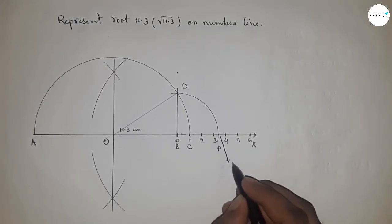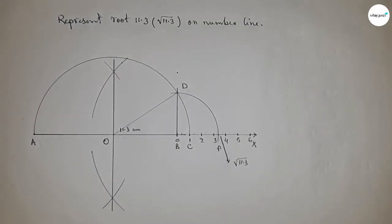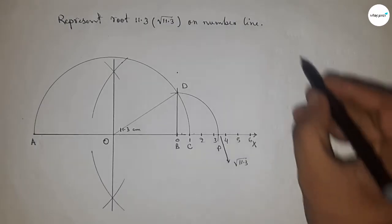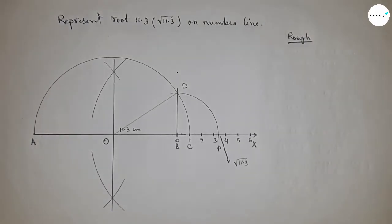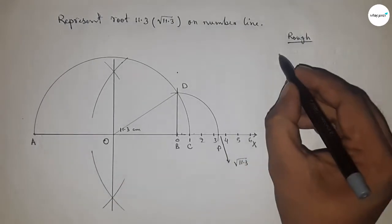And this is the representation of root 11.3 on number line. Now roughly discussing the calculation. So given AB...